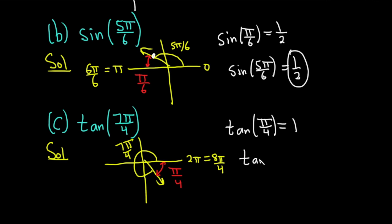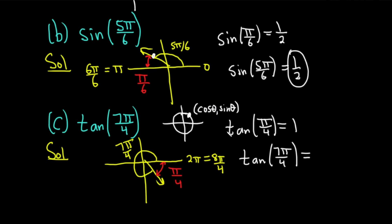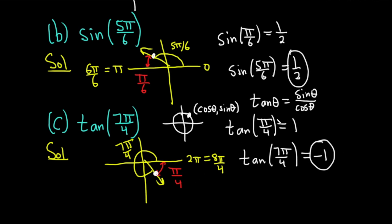Now we need the tangent of 7 pi over 4. On the unit circle, every ordered pair is of the form cosine theta, comma sine theta. So tangent of theta is sine theta over cosine theta. At 7 pi over 4, sine is negative and cosine is positive. So you have a negative number divided by a positive number, giving a negative result because the signs are different. So the tangent of 7 pi over 4 is negative 1.